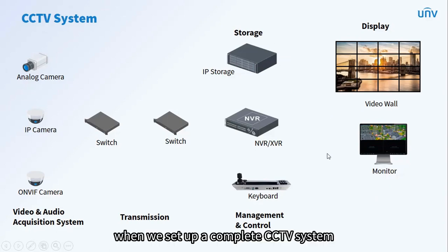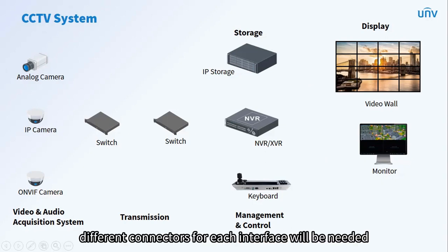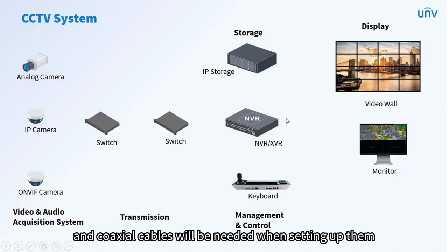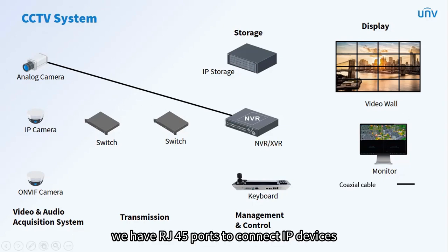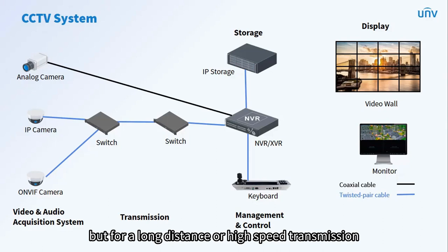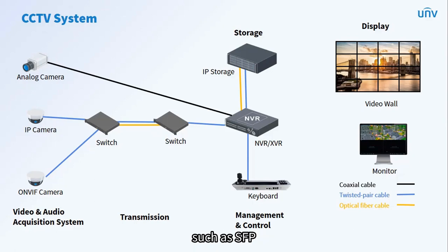When we set up a complete CCTV system, different interfaces will be found in devices and different connectors for each interface will be needed. For example, analog cameras and hybrid NVRs are deployed in BNC ports, and coaxial cables will be needed when setting them up. For short-distance network connection, we have RJ45 ports to connect IP devices via twisted pair network cables.